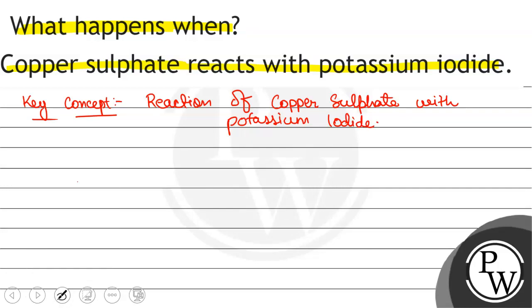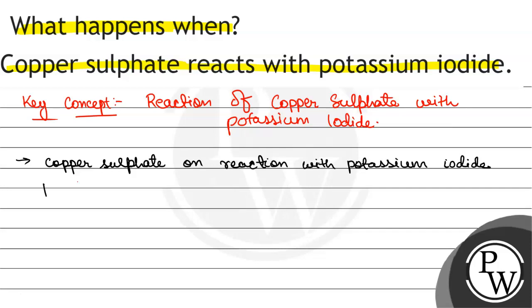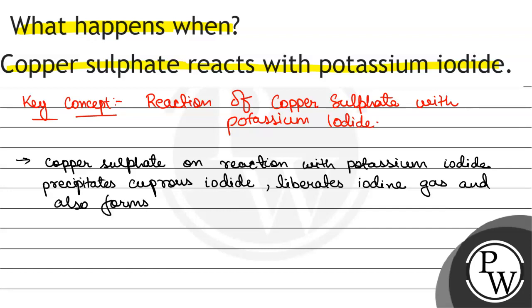We will see copper sulphate on reaction with potassium iodide precipitates cuprous iodide. Cuprous iodide precipitate ho jata hai, liberates iodine gas and also forms potassium sulphate.